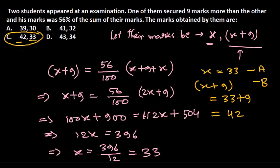The takeaway message here is that you need to construct the equation and assume the mark of one student as a single variable x. You cannot take more than one variable — you take only one variable and calculate from there. I hope that's helpful, guys. Thank you.